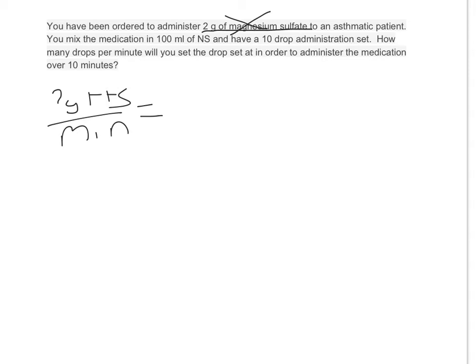Whenever we have drops per minute, the next thing we put in is the drip set. What drip set are we using? It's a 10 drop administration set, so we know 10 drops over 1 milliliter.